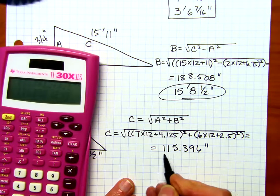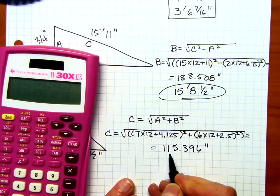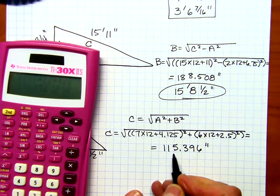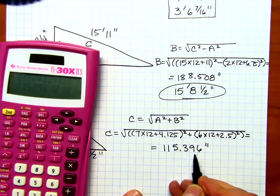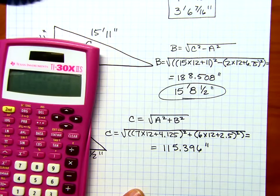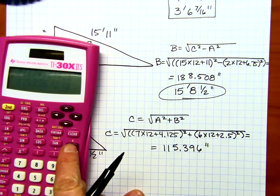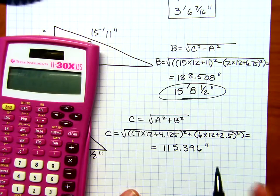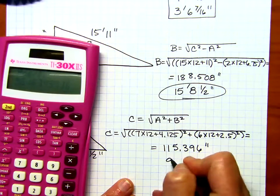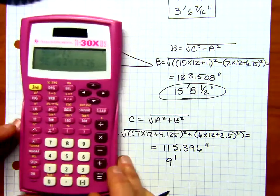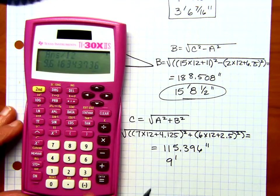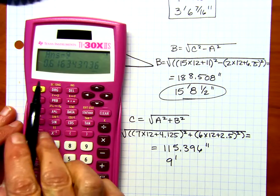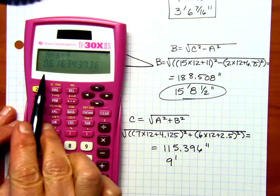And notice that's greater than 48 inches, so we're going to go ahead and change this to feet and inches, and then convert that to a fraction of an inch. And so, we're going to divide what's in our calculator by 12, and we get 9, 9 feet, 9.616, blah, blah, blah. So, subtract the 9, and we're going to figure out how many inches that represents.